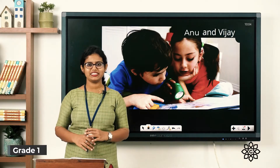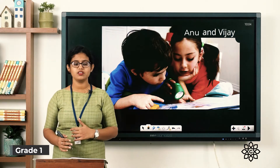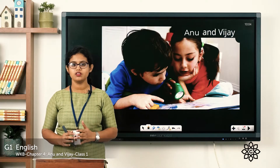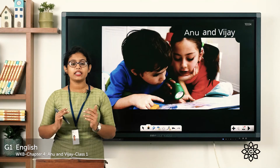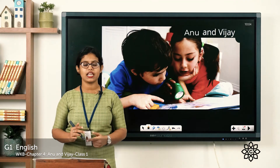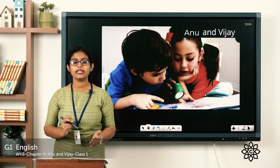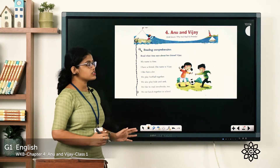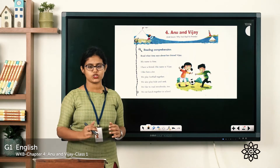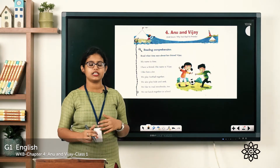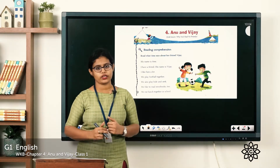Good morning to all. Today we are going to discuss our English workbook chapter number four. The name of the chapter is Anu and Vijay. You can open your textbook — this chapter is the link lesson of what we have learned in the English reader, 'Why Neil Had No Friends.' First you have a passage given, a reading comprehension. Let's read this, let's understand what it is, then we will answer the following questions.